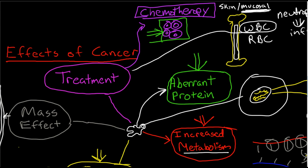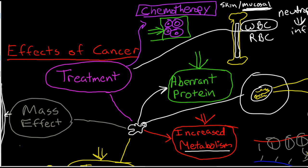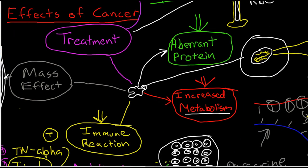So, again, the major effects of cancer that we witness are due to these five basic elements of cancer. The aberrant proteins, the increased metabolism, our body's response, the immune system's reactions, the mass effect of the growing tumors, and side effects of treatment itself, primarily chemotherapy.